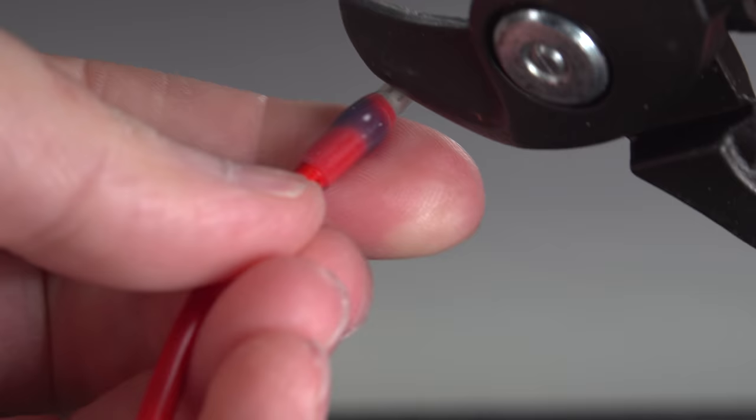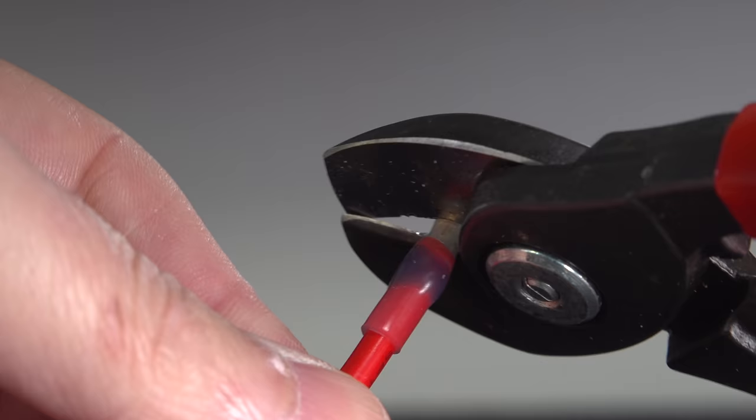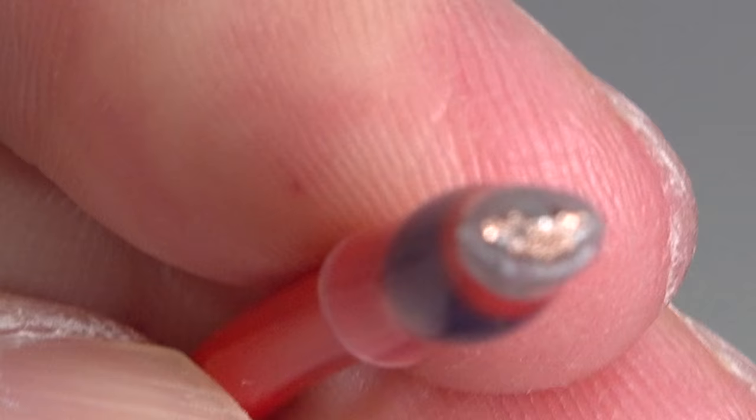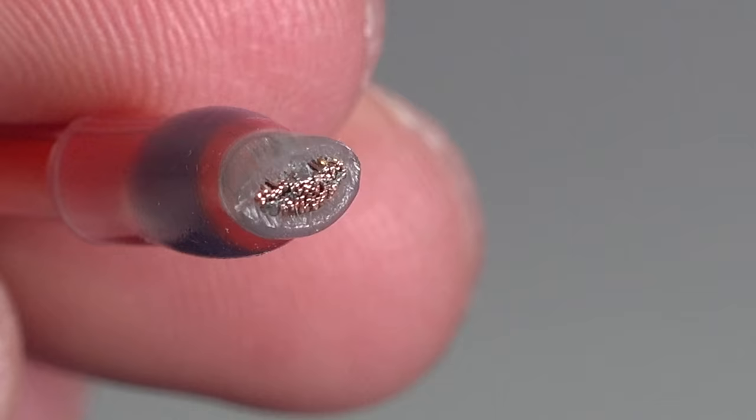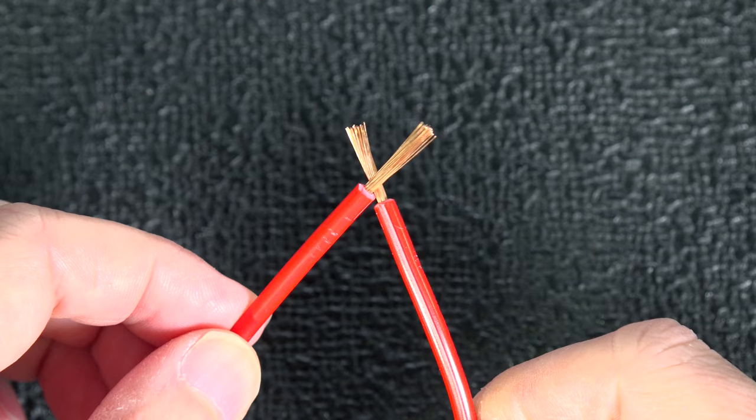But I wanted to see how far did the solder actually travel, so I went ahead and recut the connector a lot closer to the insulation. And to my surprise, you can see that the solder also reached these wires as well. And even though the solder is not touching every single wire, it definitely flowed around most of them, and it's going to give you a better connection.